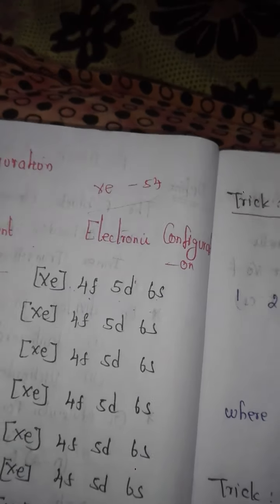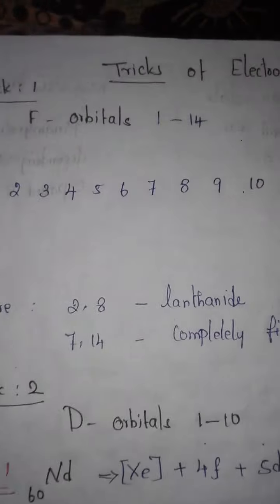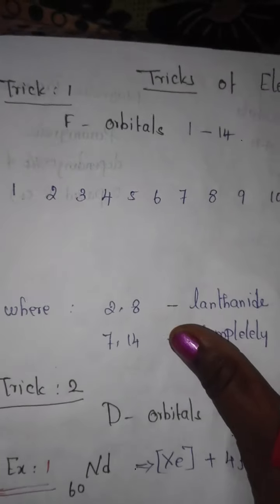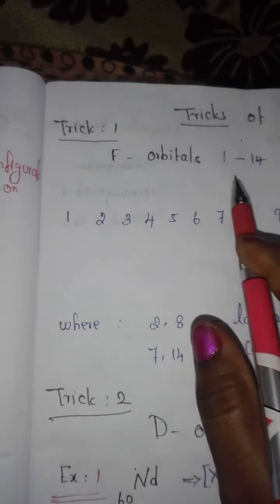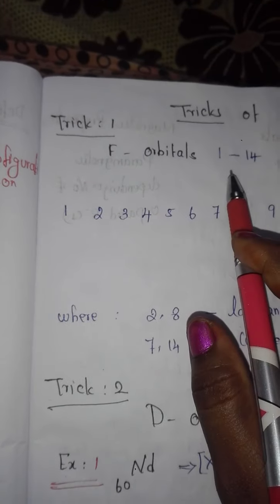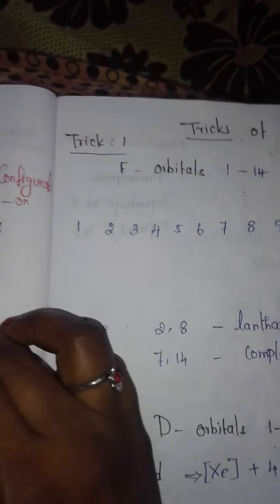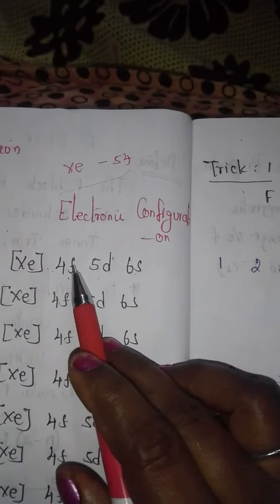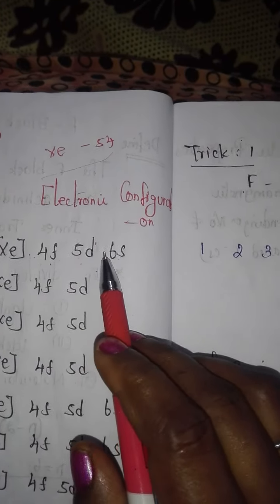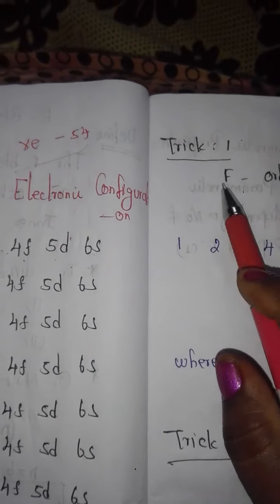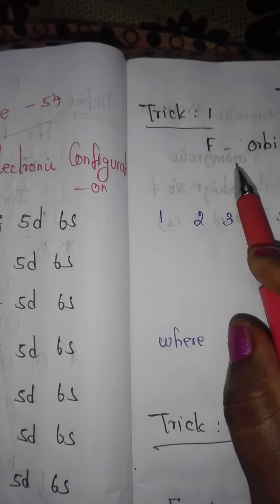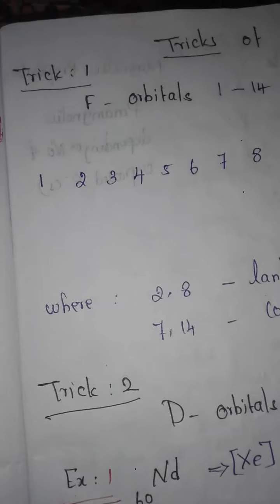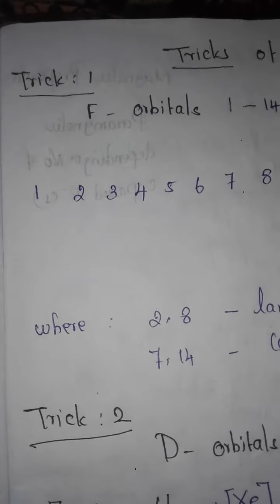Now, tricks for writing electronic configurations. Trick number 1 is about filling the F orbital. The F orbital is filled first. The F orbital can hold 1 to 14 electrons.